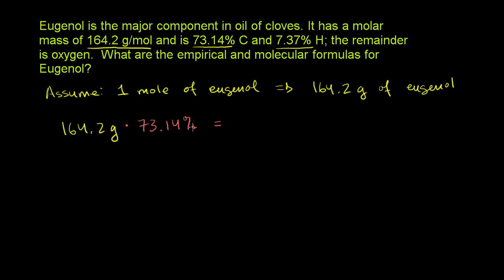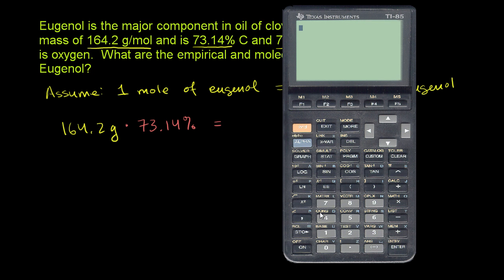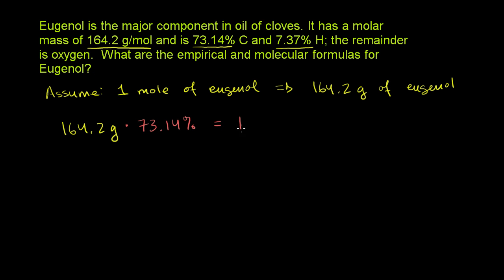Let's figure out our mass of carbon. Using the calculator: 164.2 times 0.7314 gives us 120.1. We have four significant digits in each number, so we get 120.1 grams of carbon.